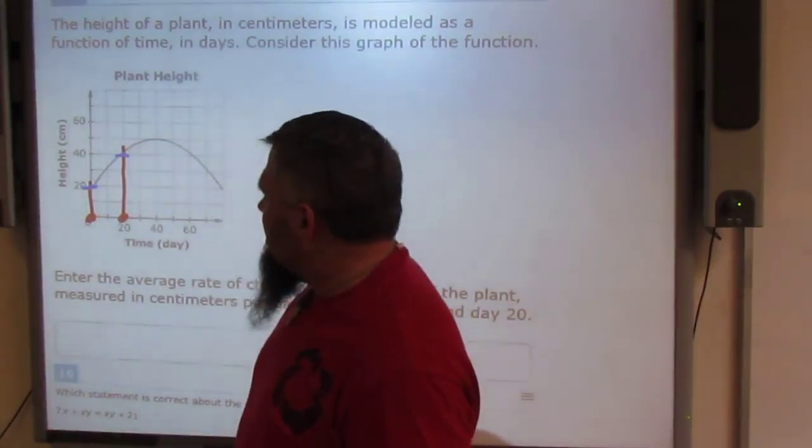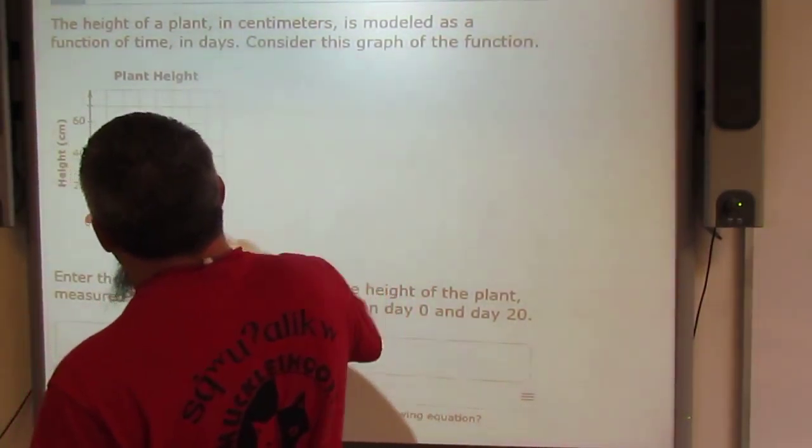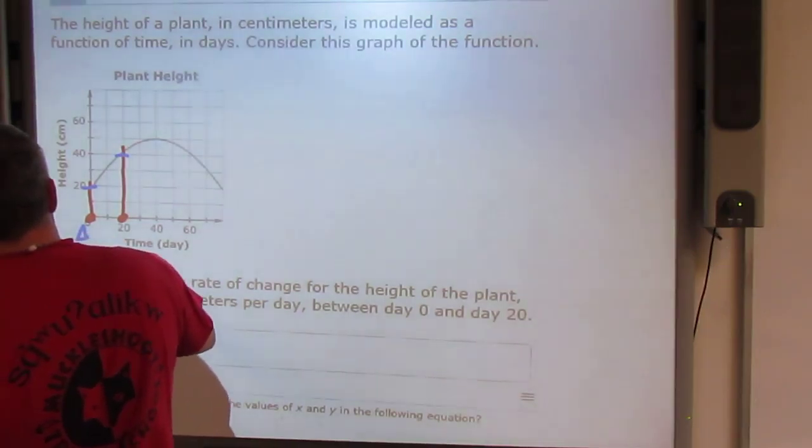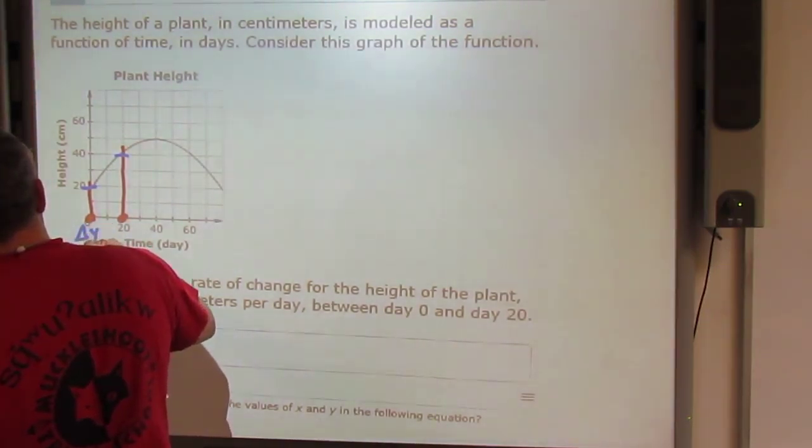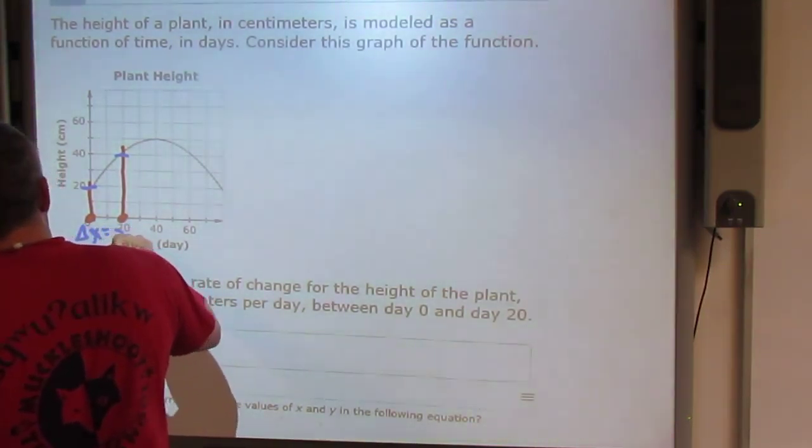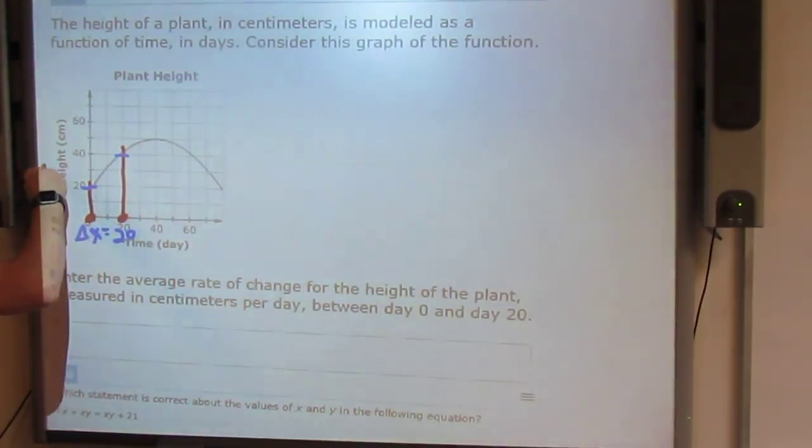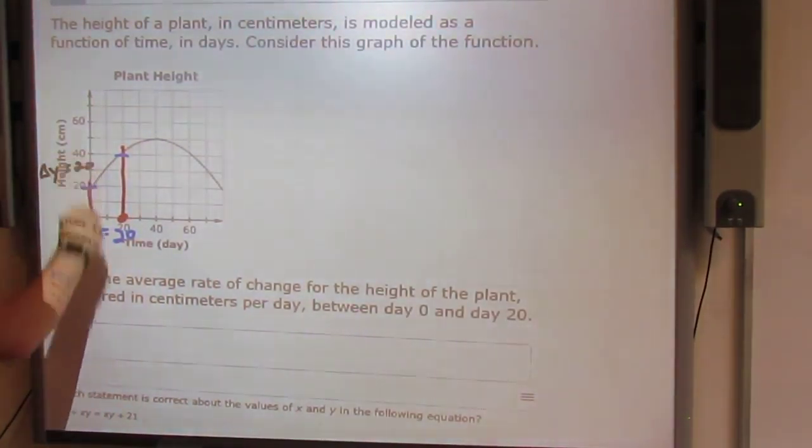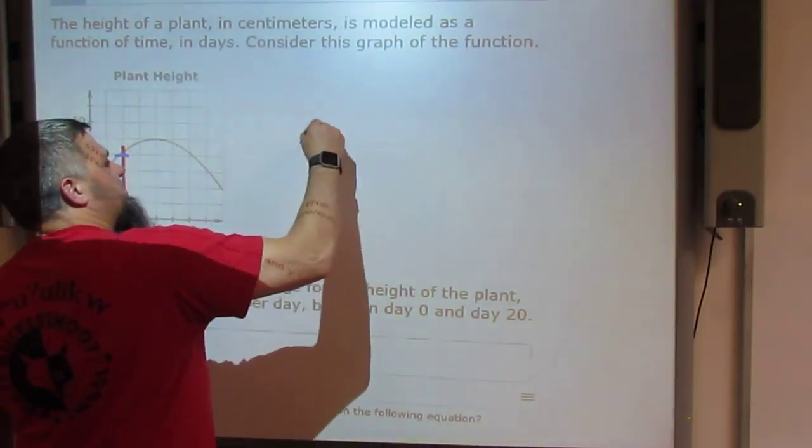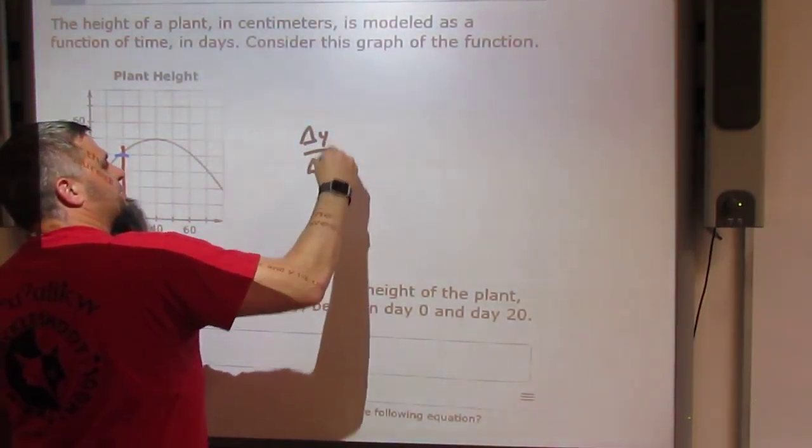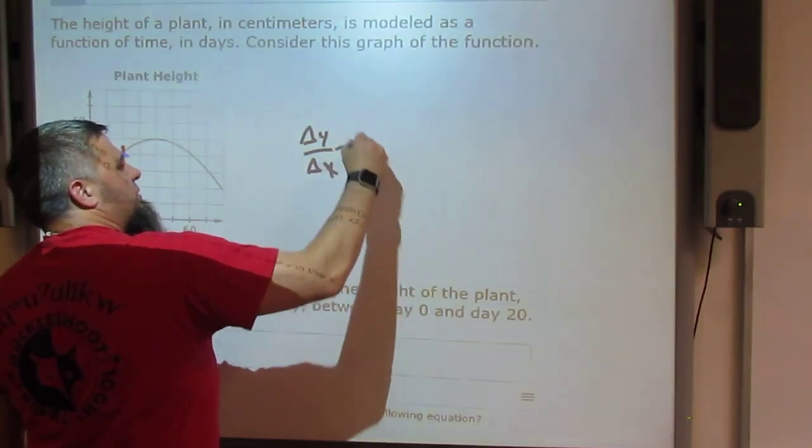And as you can see, it crosses here and here. So that means that the change in Y or X, sorry, it's going to be 20, and the change in Y is going to be 20. So Delta Y over Delta X is going to equal 20 over 20.